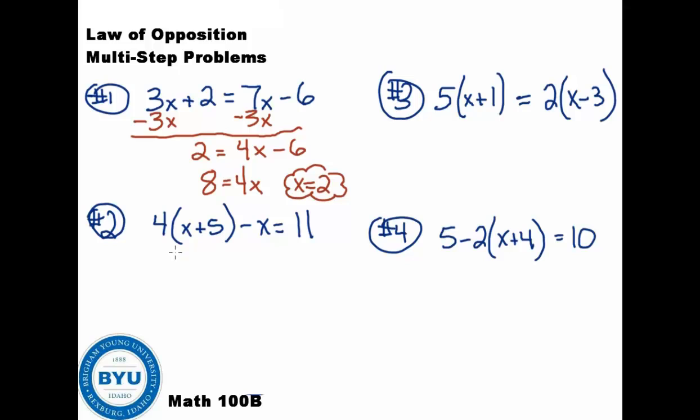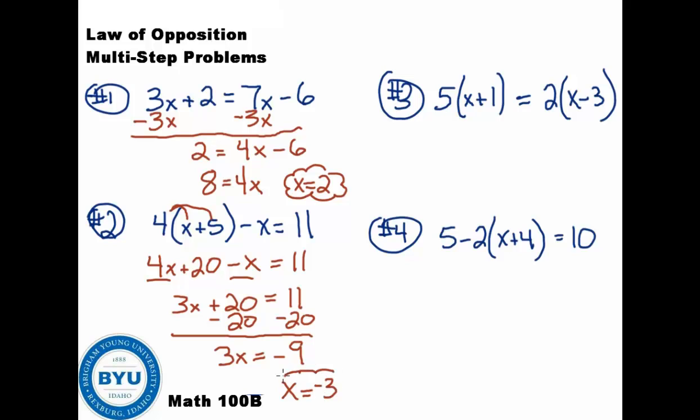On number 2, we're going to go ahead and distribute. So we'll go ahead and distribute this 4 into the parentheses. We get 4x plus 20 minus x equals 11. Let's go ahead and combine these like terms. 4x minus x is 3x plus 20 equals 11. My next move would be to subtract 20 to both sides, which leaves me with 3x equals 11 minus 20, that's negative 9. We then would divide by 3, so we get x equals negative 3 as our answer after dividing by 3 to both sides.